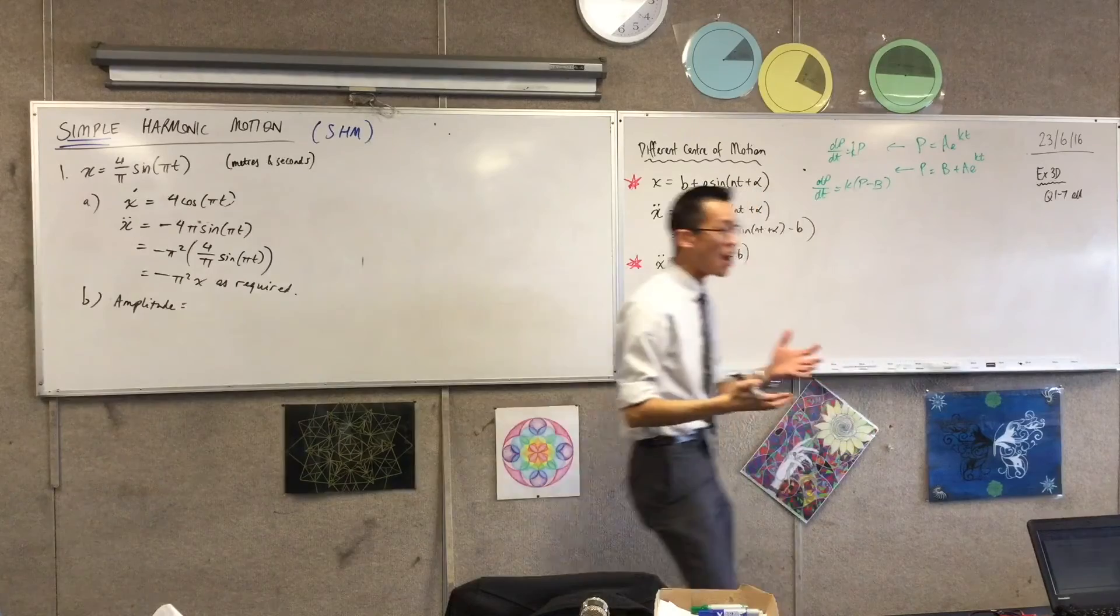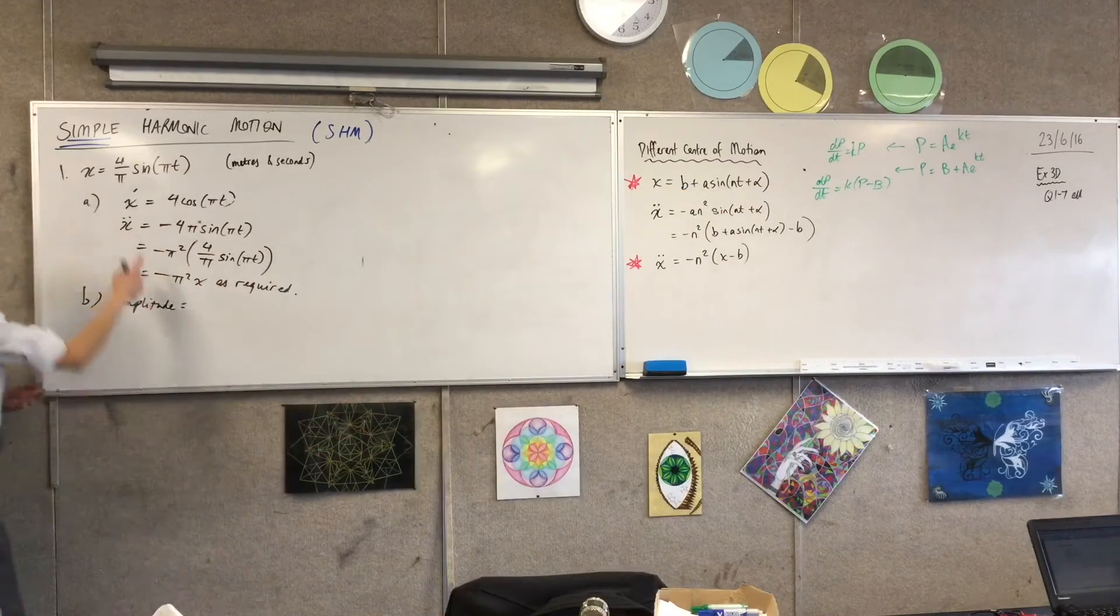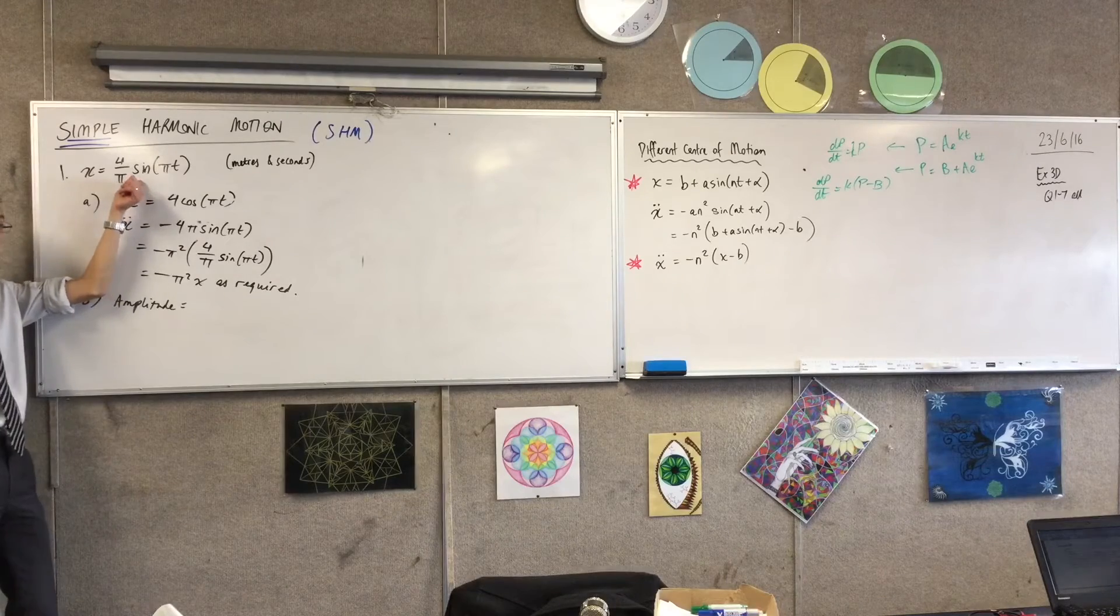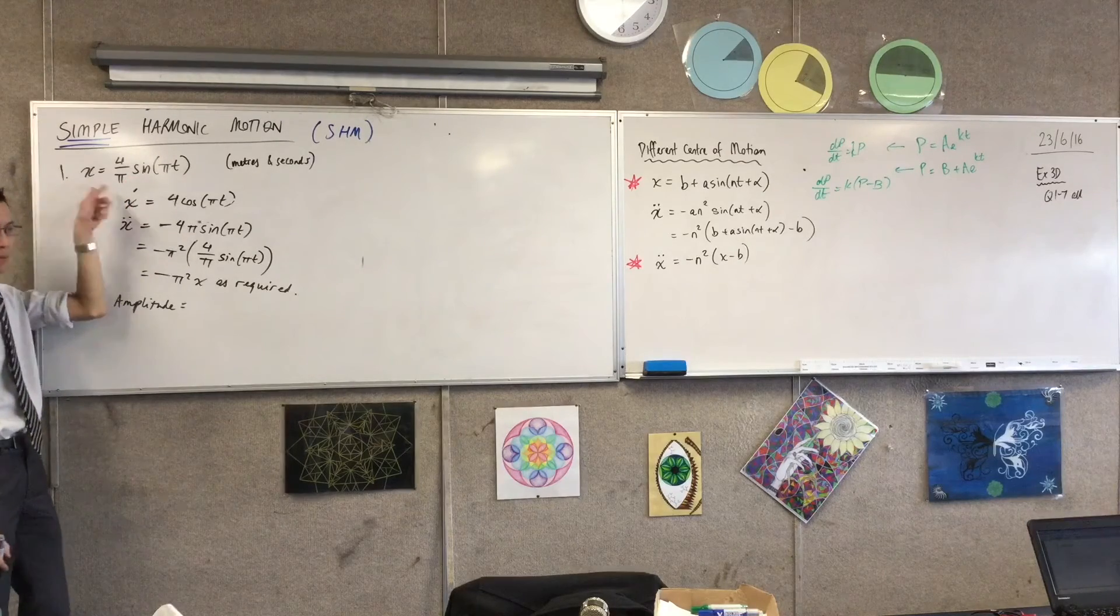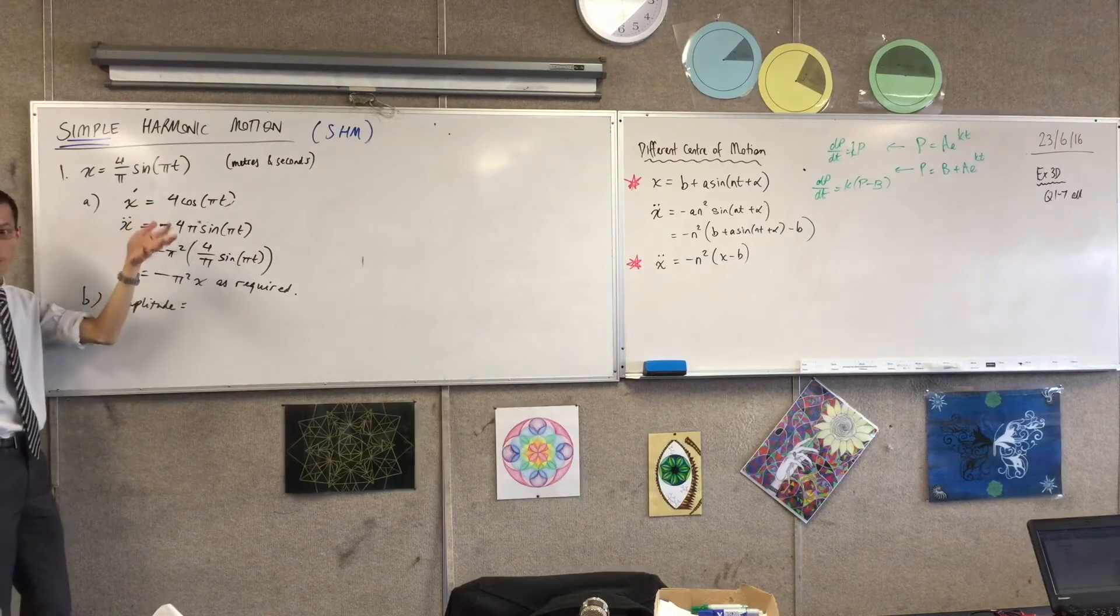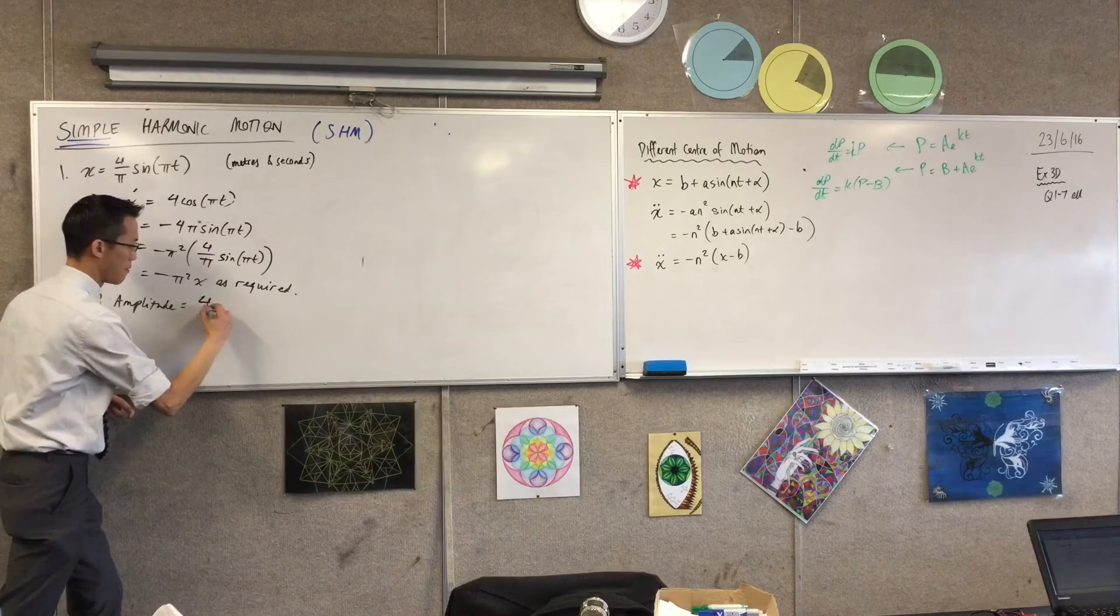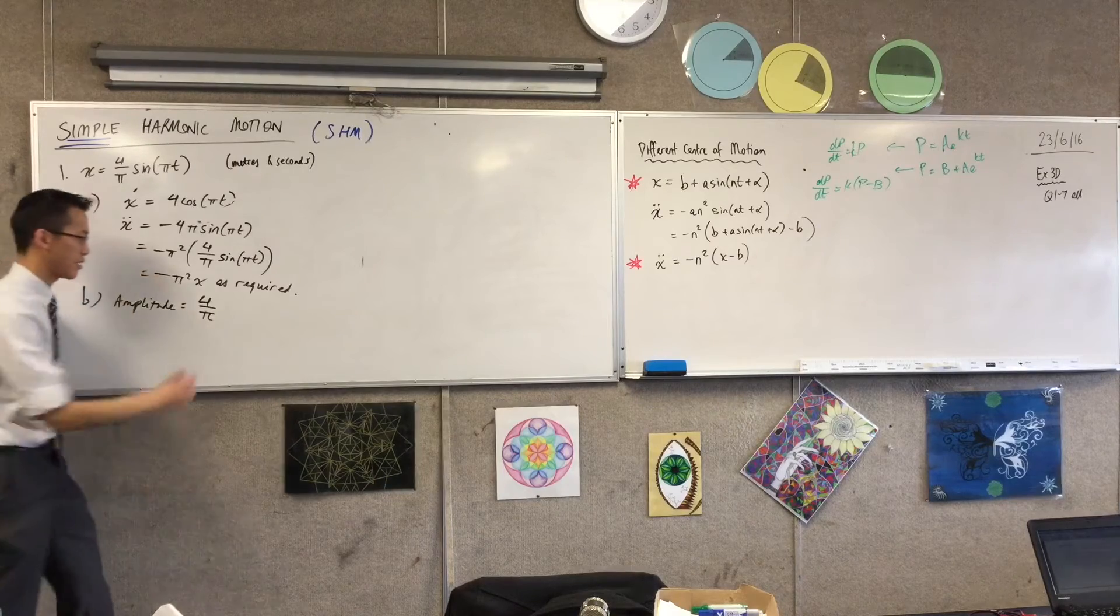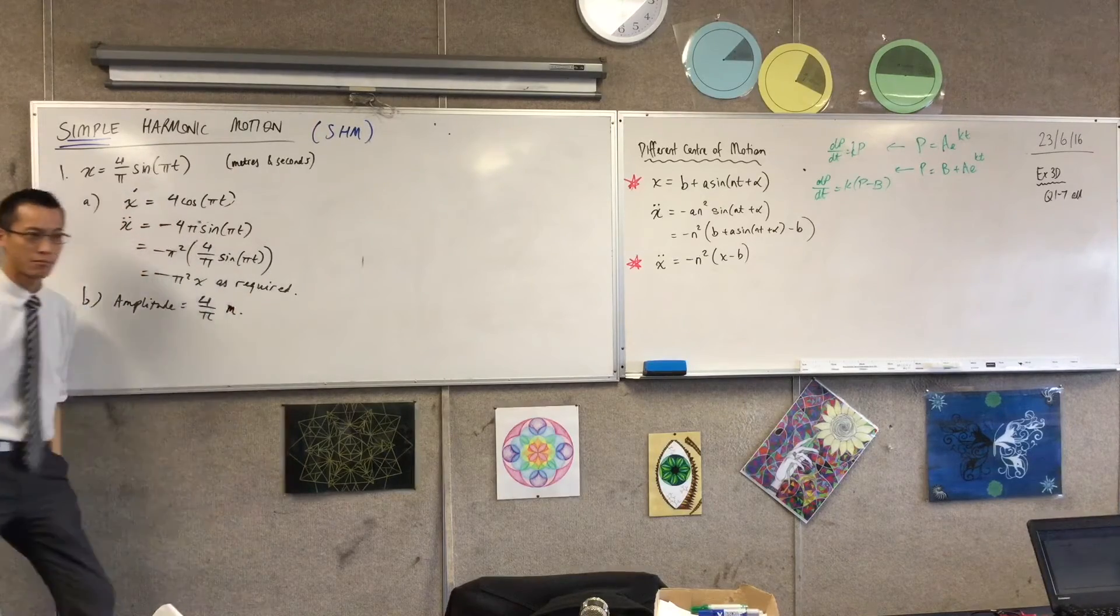Amplitude is just a coefficient of whatever sine, cosine, whatever wave function you've got in your displacement function. Okay, so therefore the amplitude I would just read as four on pi. But by the way, we have units. Units have been provided to us. They're meters, right? Okay, cool.